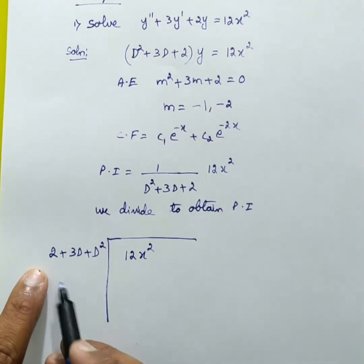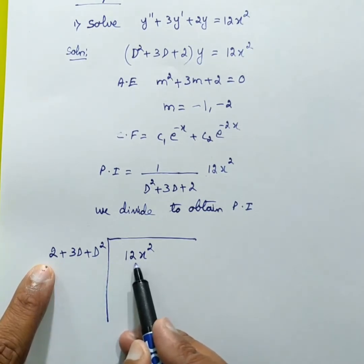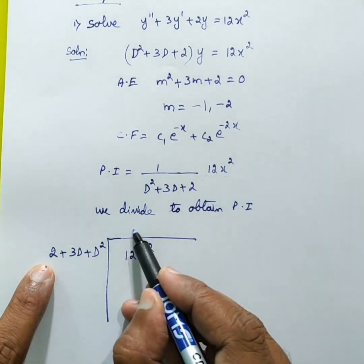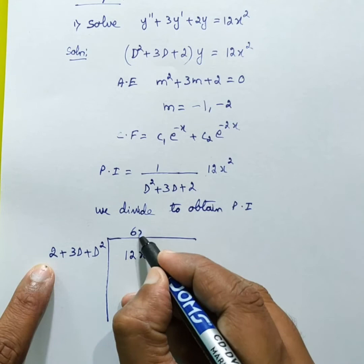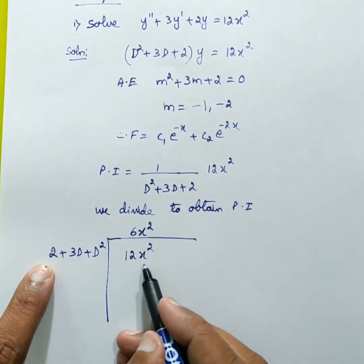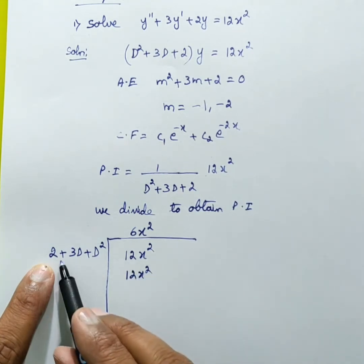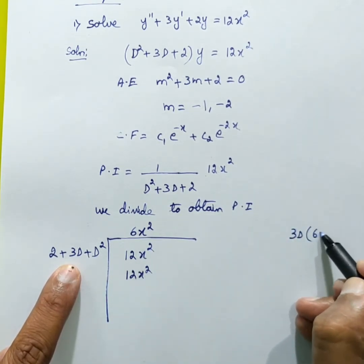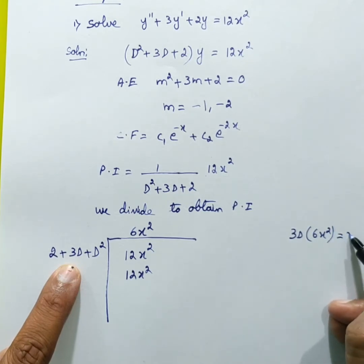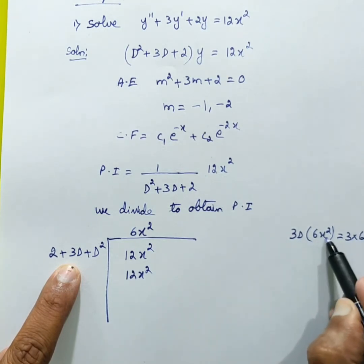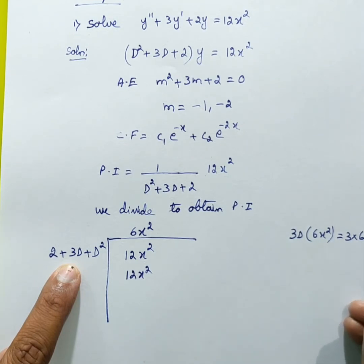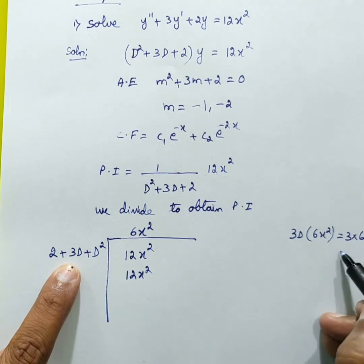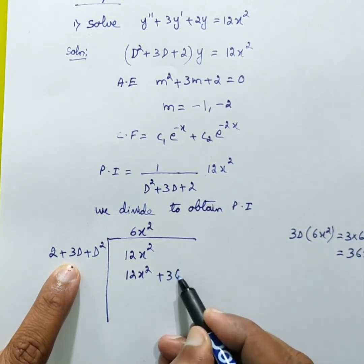Now let us divide. We ask: what must 2 be multiplied by to get 12x squared? The answer is 6x squared — 2 times 6x squared gives 12x squared. Next, multiply 3D by 6x squared: take 6 as constant and differentiate x squared, giving 2x, so 3 times 6 times 2x equals 36x. Then D squared multiplied by 6x squared: differentiate x squared twice — first gives 2x, second gives 2 — so 6 times 2 equals 12.